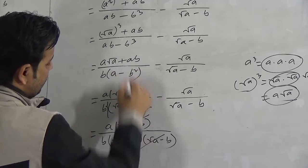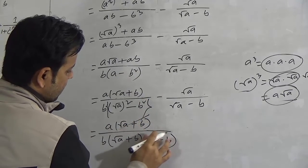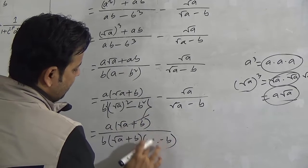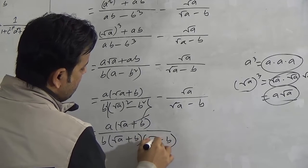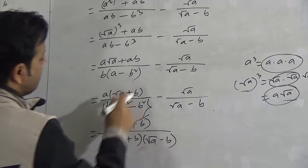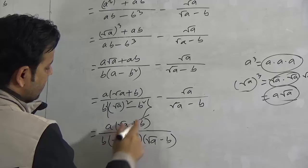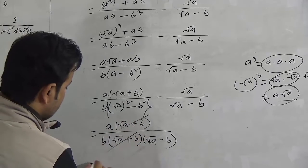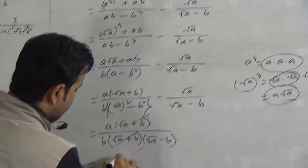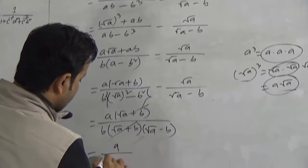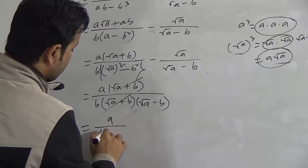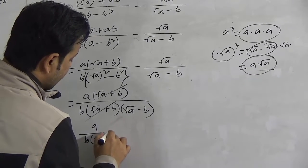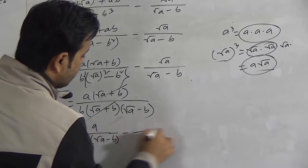Now in the numerator we have square root a minus b. Sorry — here the sign should be plus, not minus. So we can cut square root a plus b from numerator and denominator. That gives us a divided by b, into square root a minus b.